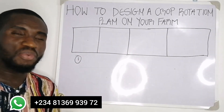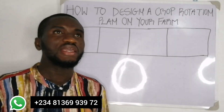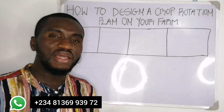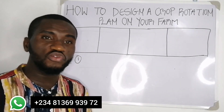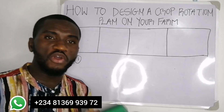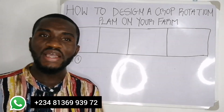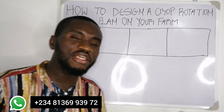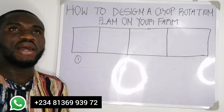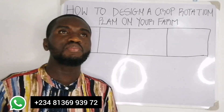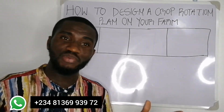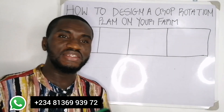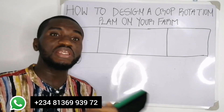Another principle is that an exhaustive plant — plants that take away a whole lot of nutrients from the soil — must be followed with another class or type of crop that replenishes nutrients into the soil. And another principle guiding this process is that you don't plant the same type of crop in the same plot in a sequential order.